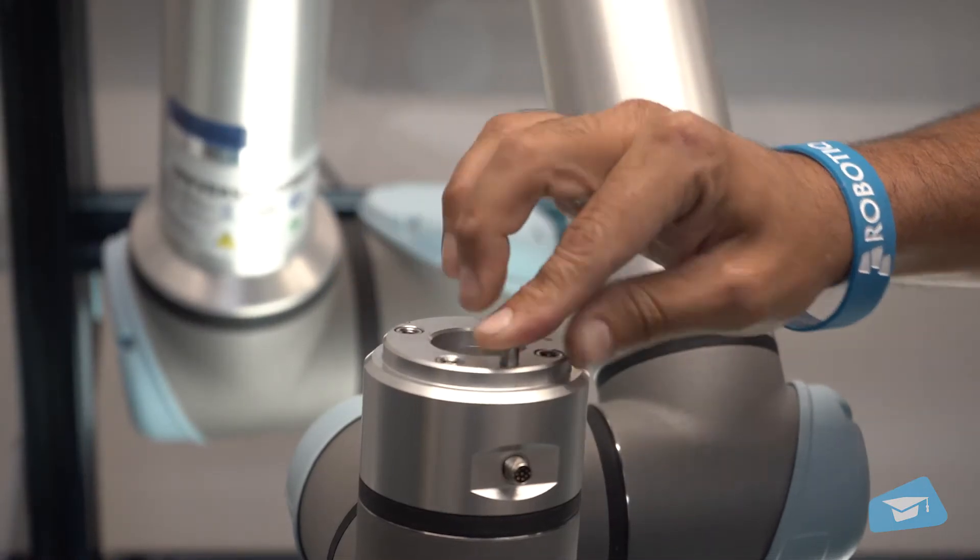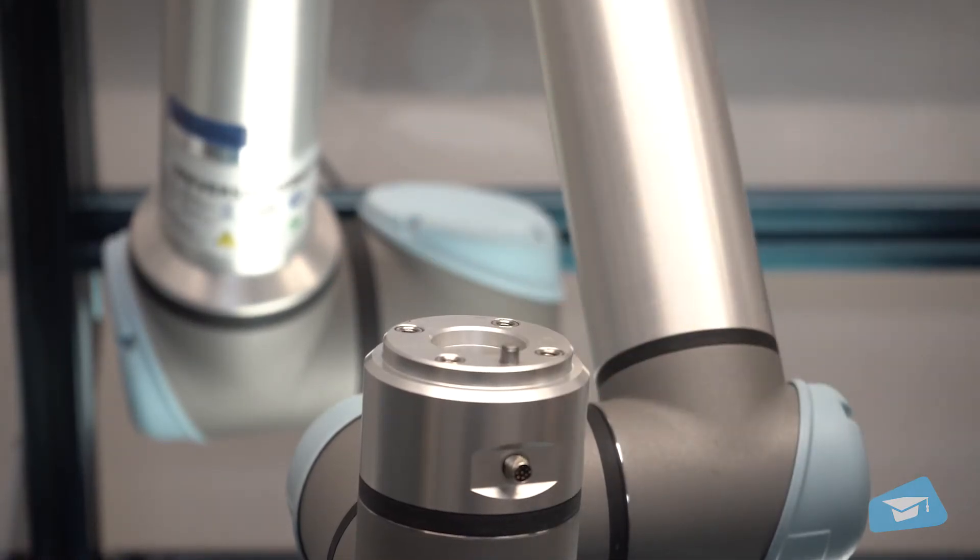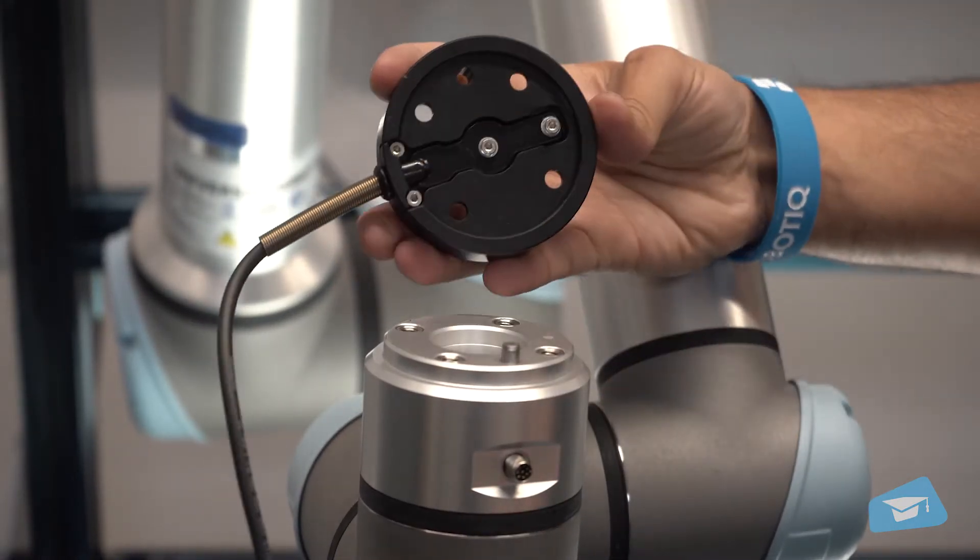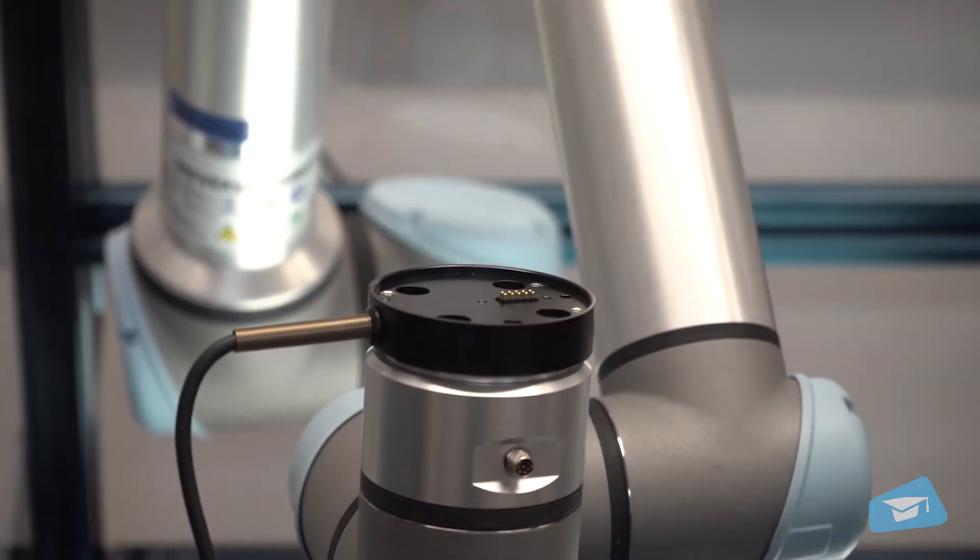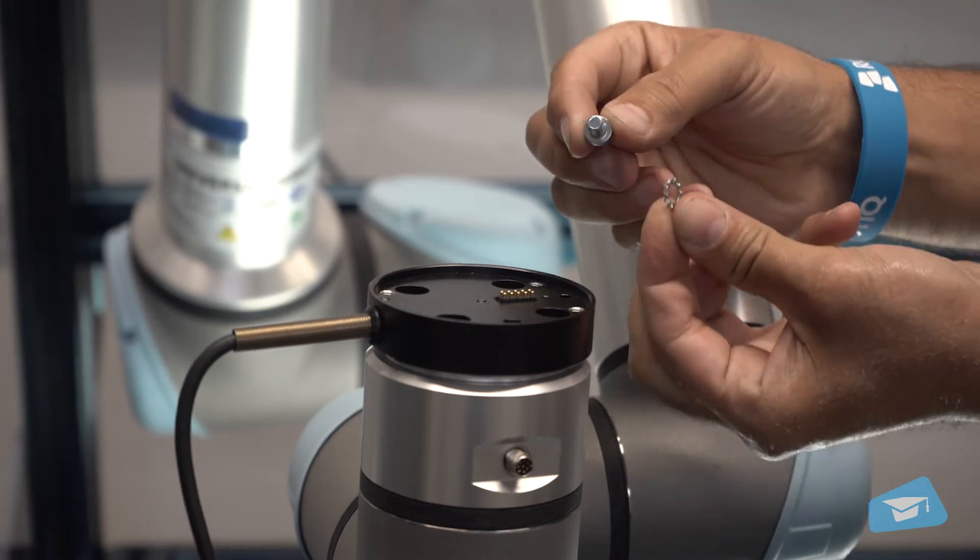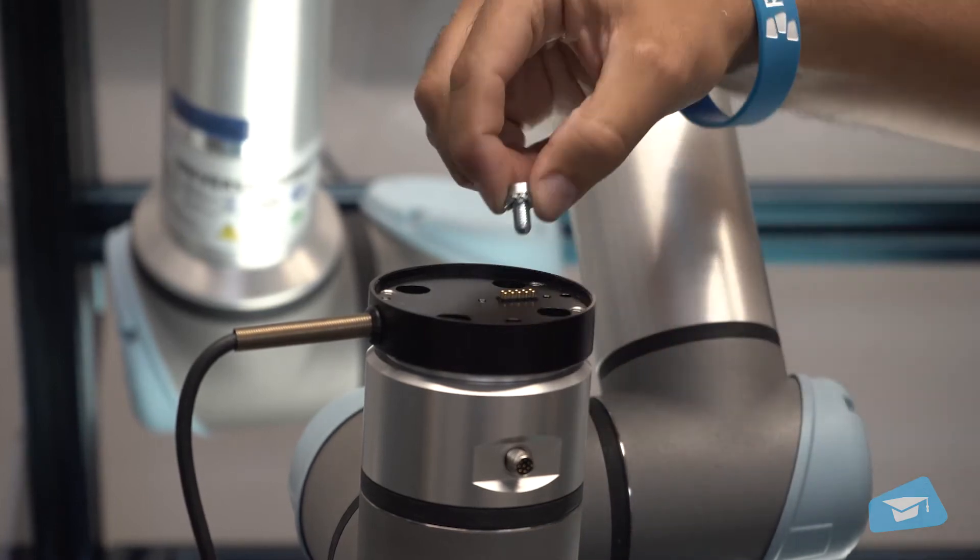First, place the provided dowel pin in the robot tool flange. Using a hex key, secure the Robotiq coupling on the robot wrist with the M6 screws and tooth lock washers provided in the kit.